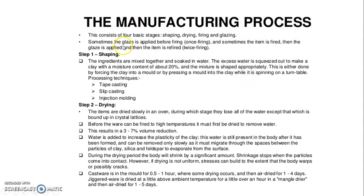The manufacturing process has four basic stages: shaping, drying, cleaning, and glazing. In the shaping process, the ingredients are mixed together and soaked in water. The excess water is used out to make clay with a moisture content of about 20%, and the mixture is shaped appropriately.